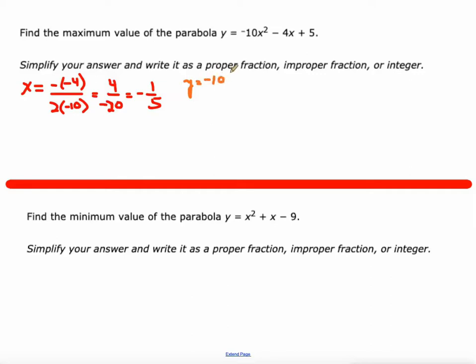So negative 10 times negative 1 fifth squared minus 4 times negative 1 fifth plus 5. If you're good with a calculator, now's a good time to maybe use it and you can use some tricks and use the convert to a fraction function. So here we go though. Let's continue on with this.